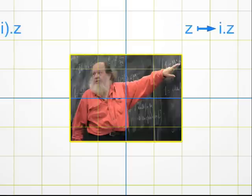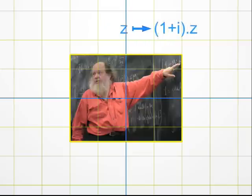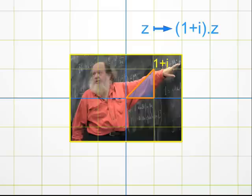Well, a bit more complicated. Multiplication by 1 plus i. Look at the complex number 1 plus i. It corresponds to the point with abscissa 1 and ordinate 1. Its argument is 45 degrees, and its modulus is the square root of 2, using Pythagoras' theorem.